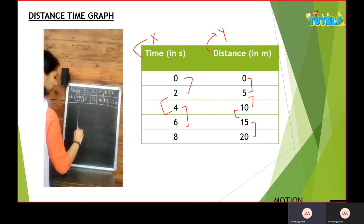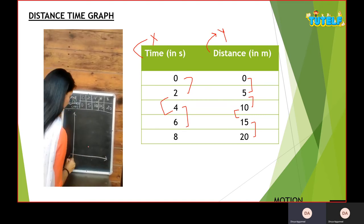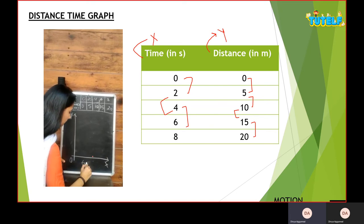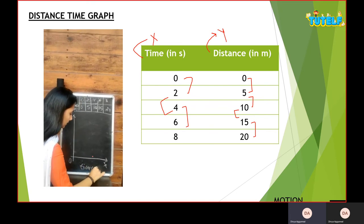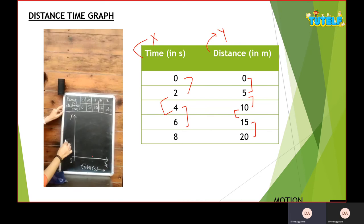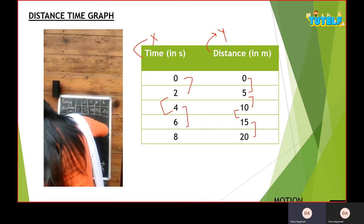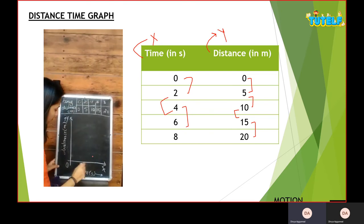Now we will plot the graph. So we take the x-axis, the interval is two seconds and the interval is five meters. Now we write time on the x-axis. We write S for units.